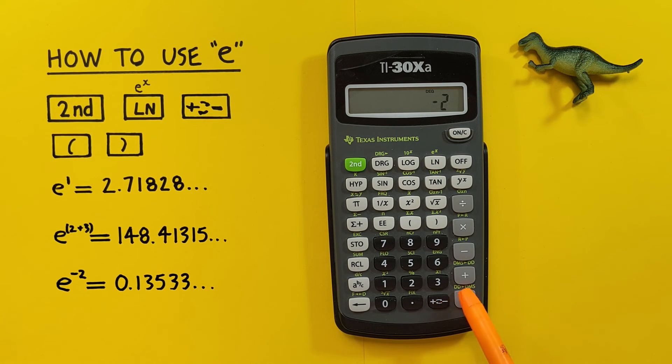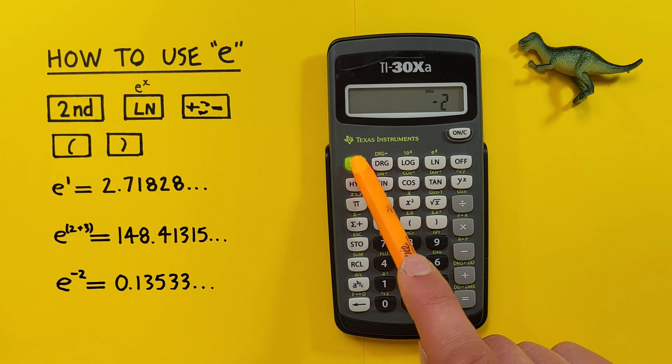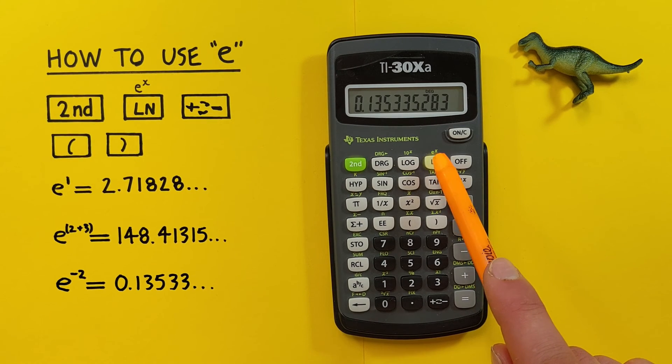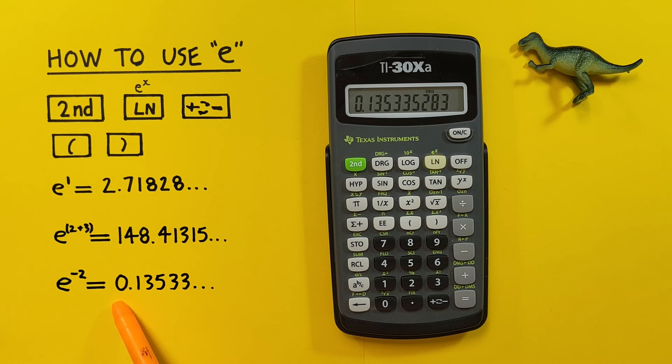There we go. Note we're not using the minus key, that'll give us a different result. We need to use this one down here. And then again second ln and we see we get a result of 0.13533 etc. All right, I hope this helps and good luck on those tests out there everybody!